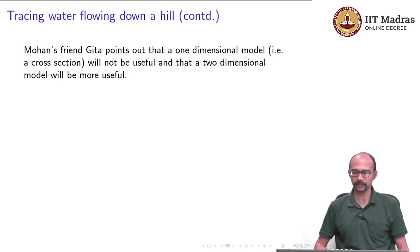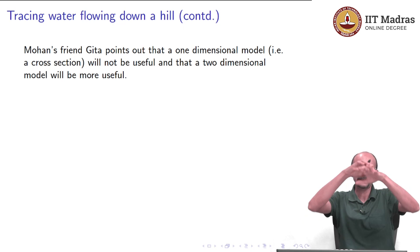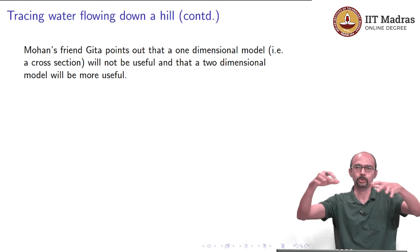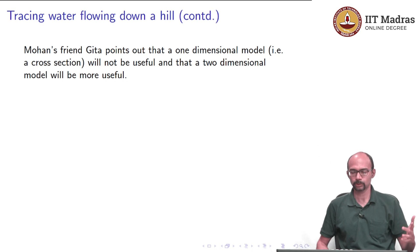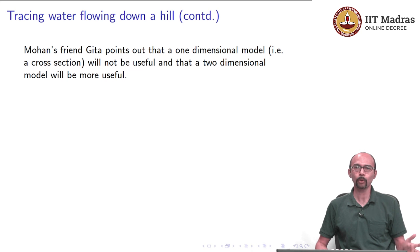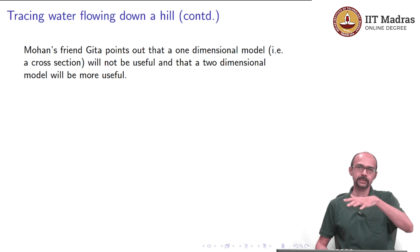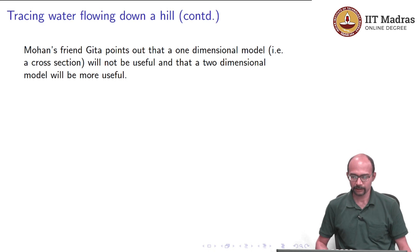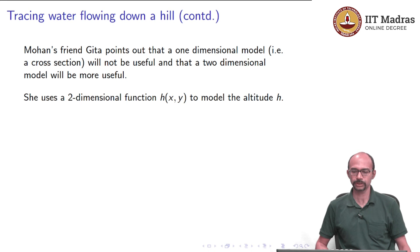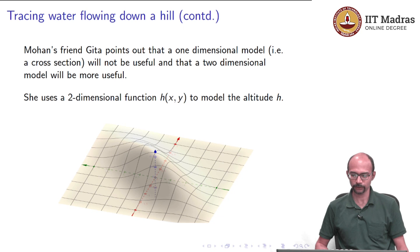Mohan's friend Gita points out that a one-dimensional model is probably not going to help because the hill is two-dimensional. In real life, on the ground, there are many directions, not just right and left. So she uses a two-dimensional function h of x, y to model the altitude h. Here is an example — a graph of a suitable exponential function that looks like a hill.